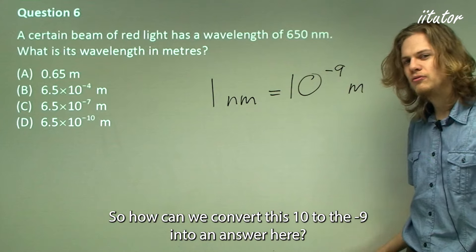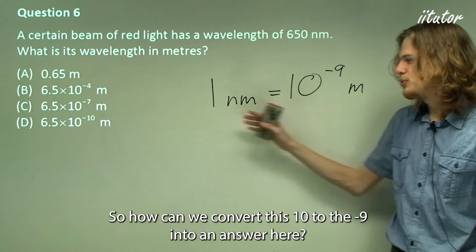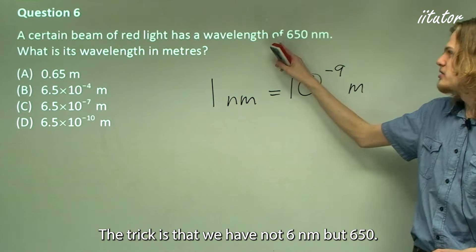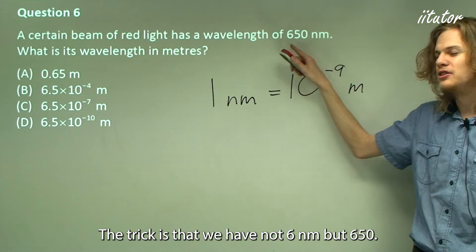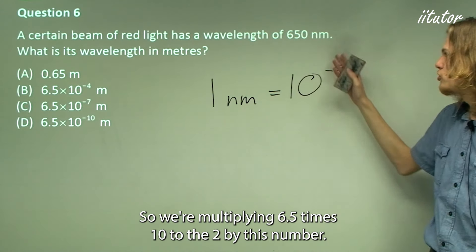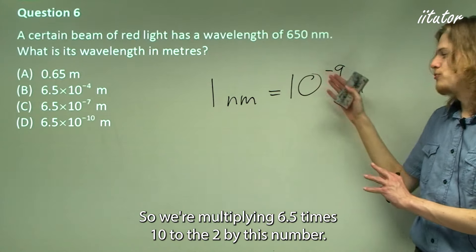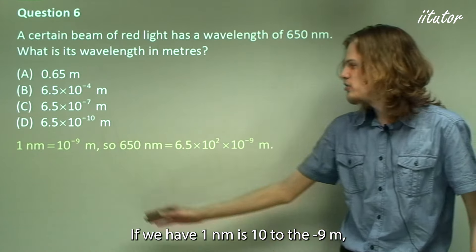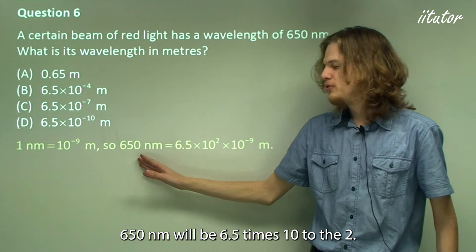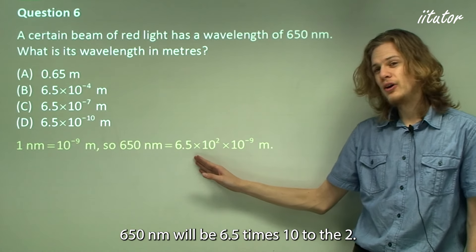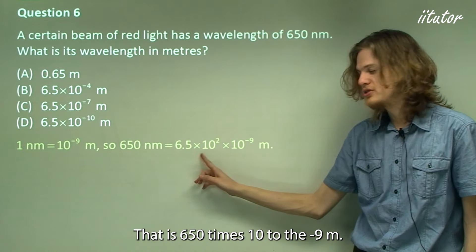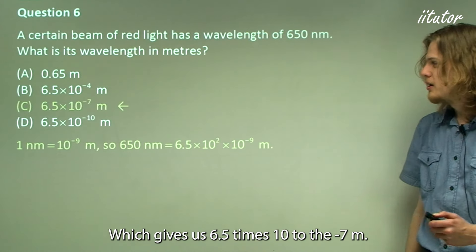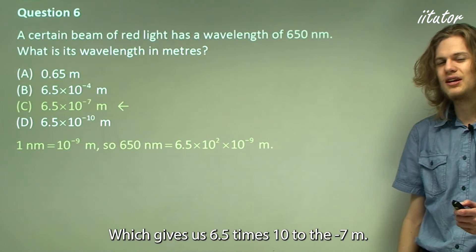So how do we convert this? We have not one nanometer but 650, which is 6.5 × 10². If one nanometer is 10⁻⁹ meters, then 650 nanometers will be 6.5 × 10² times 10⁻⁹ meters, which gives us 6.5 × 10⁻⁷ meters.